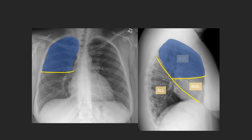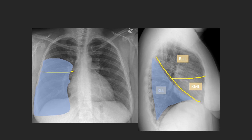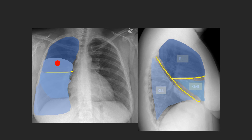The right upper lobe is always above the minor fissure. The right middle lobe is below the minor fissure and anterior to the major fissure, with a large surface of contact with the heart. The right lower lobe mainly contacts the diaphragm. On the frontal view, because of significant overlap between lobes, it can be hard to localize which lobe a nodule is in. For example, a nodule in the mid-lung zone could be in the right upper or right lower lobe — we need the lateral view to determine which.